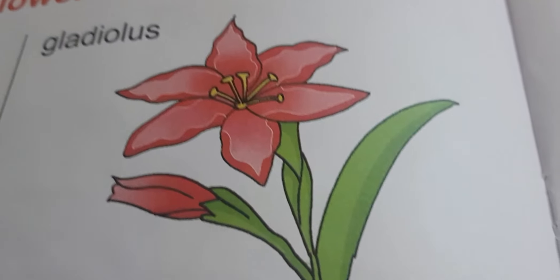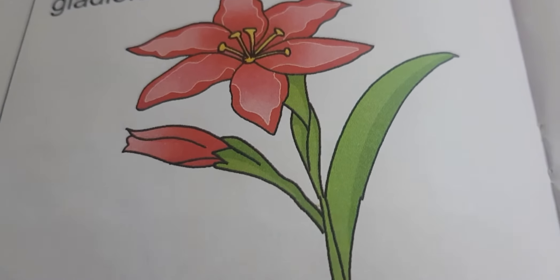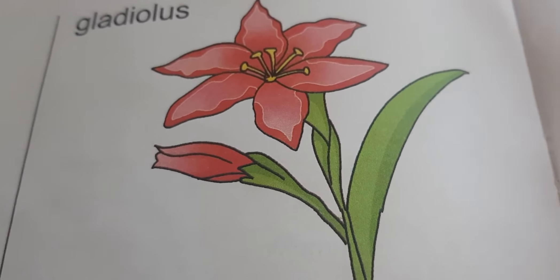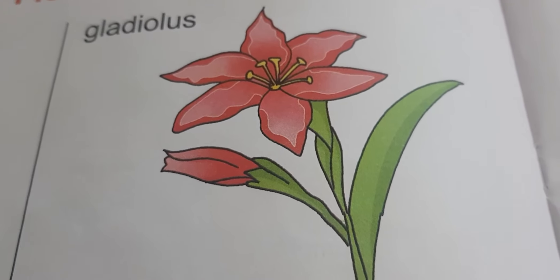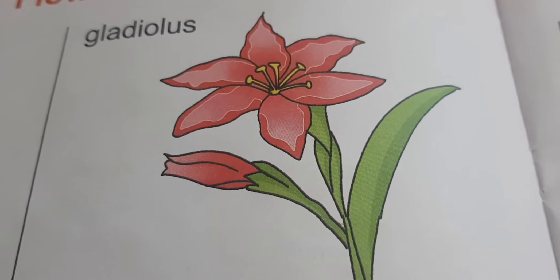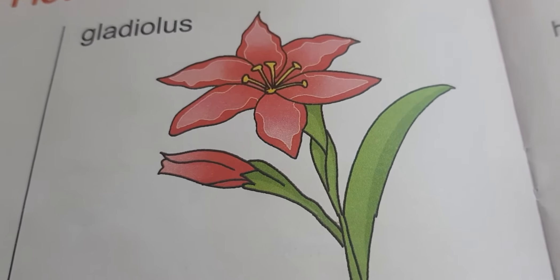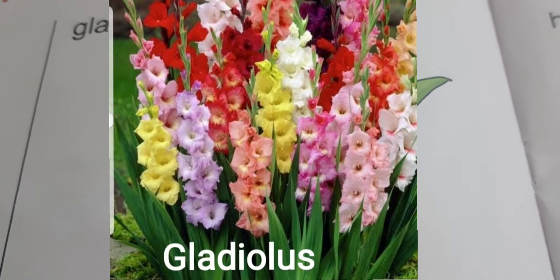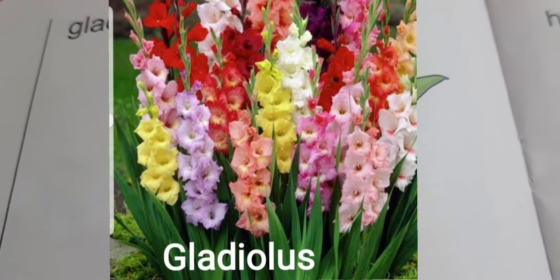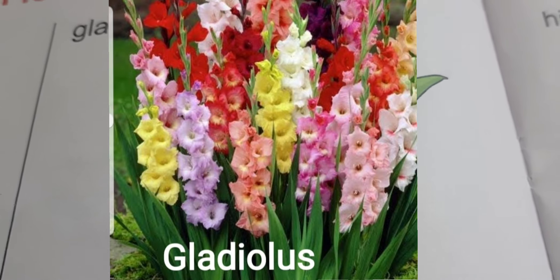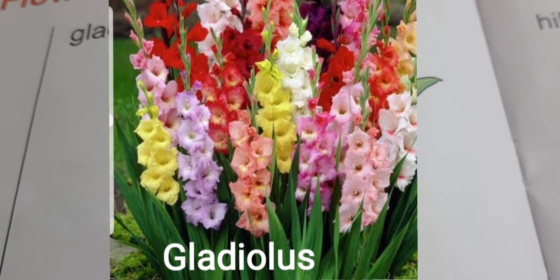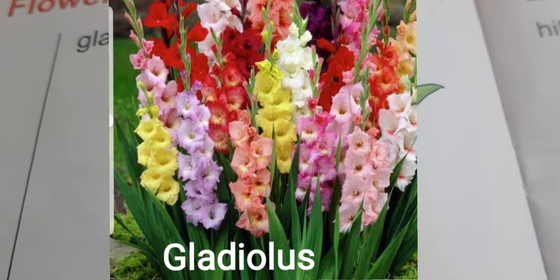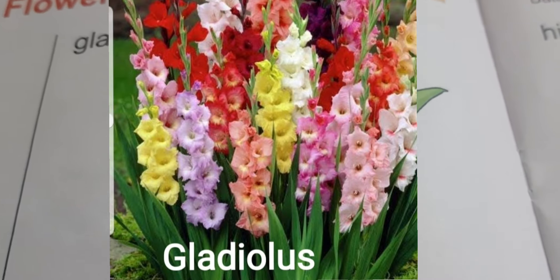Next flower is gladiolus. Gladiolus again comes in different colors. Gladiolus jo hote hain — aap dekh sakti ho picture mein — aise lambe lambe se sticks hote hain, us mein aate hain. (Gladiolus flowers come on long stick-like stems, as you can see in the picture.)